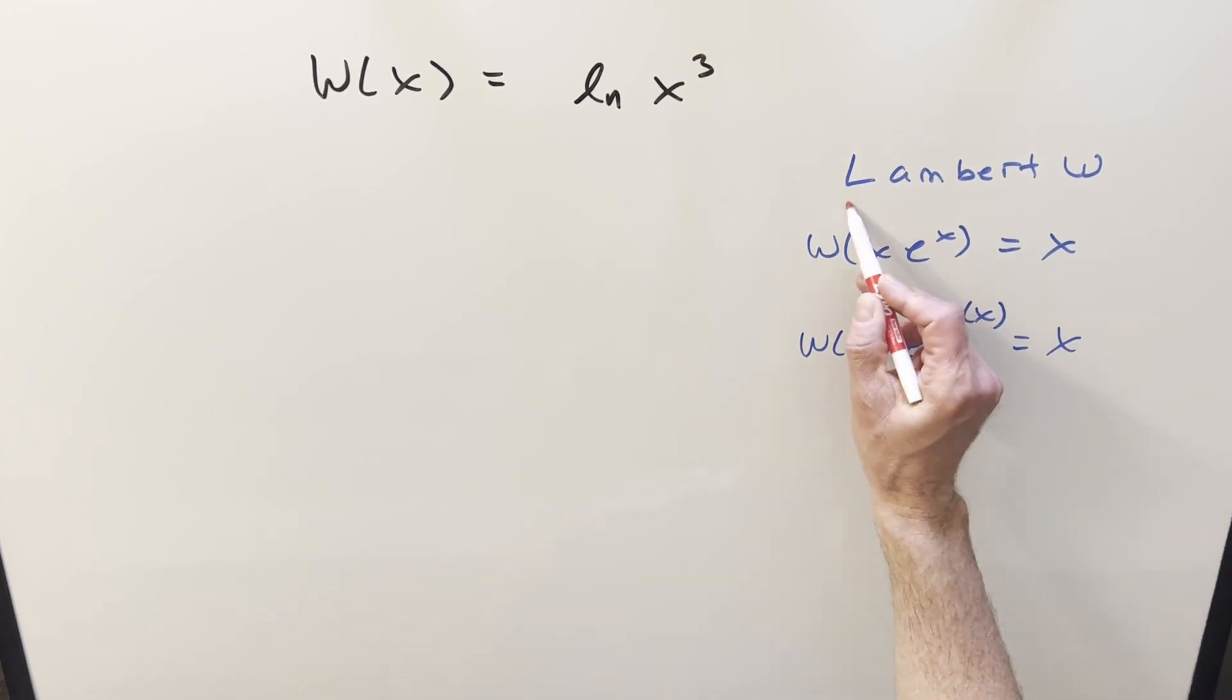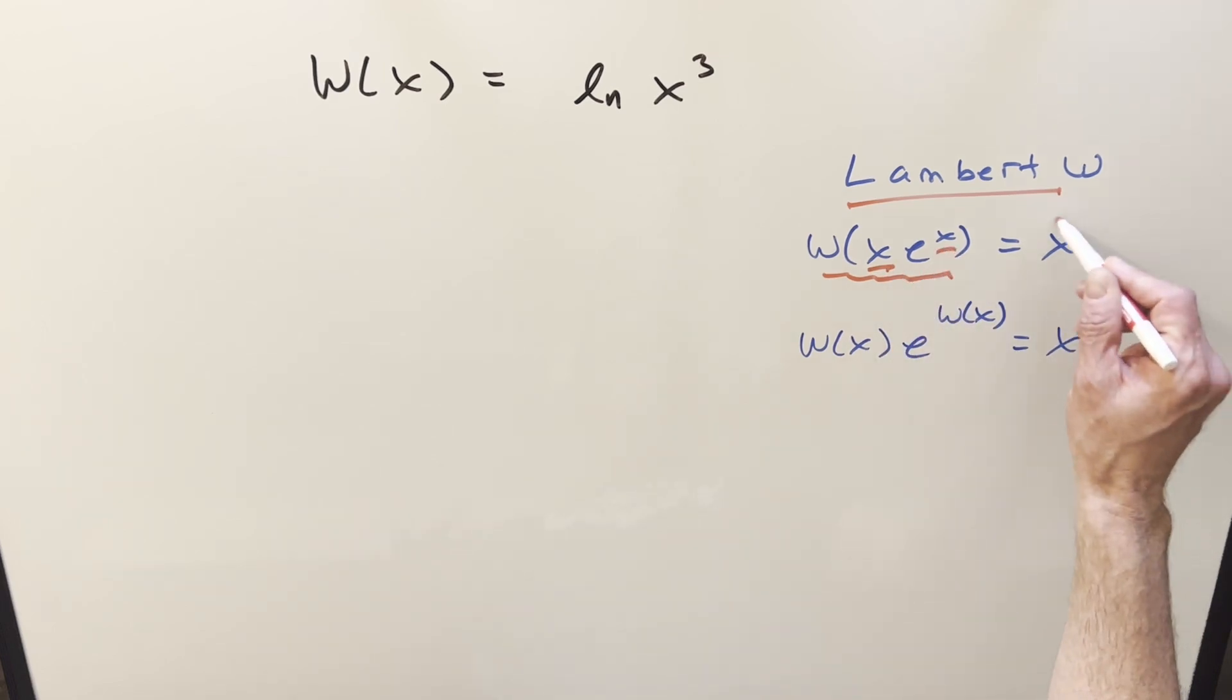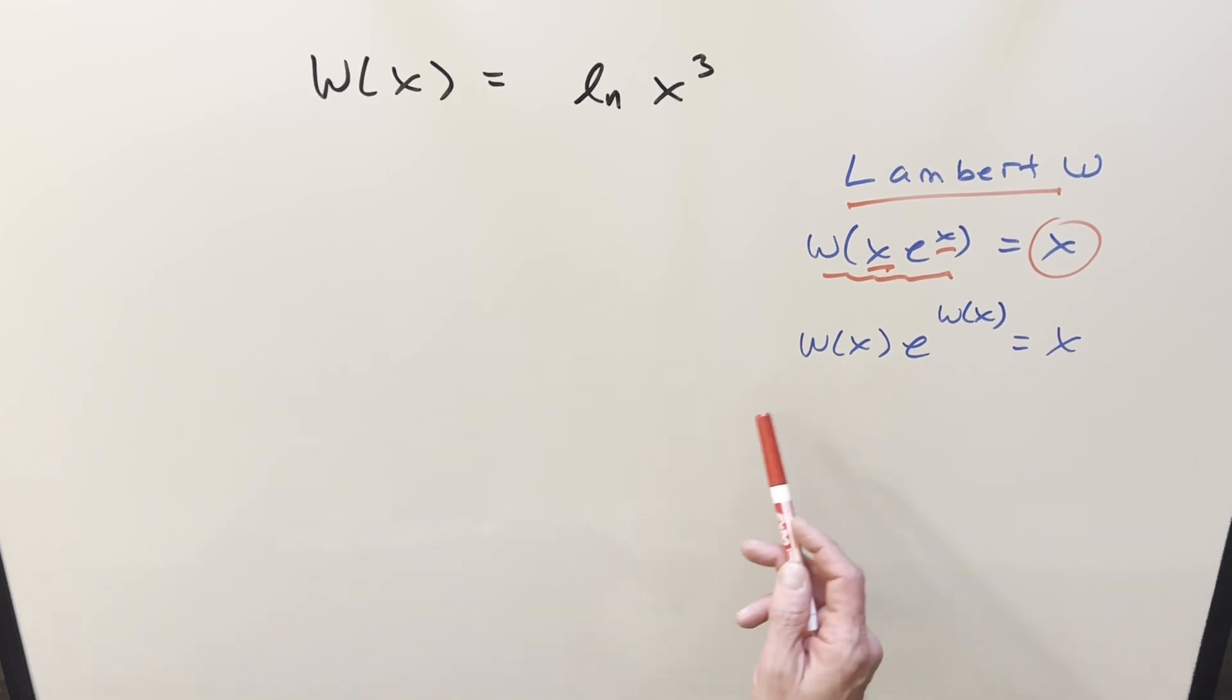Over to the right, we've got a couple useful formulas for the Lambert W function. This one is probably the most important one, that if we've got something and we take the Lambert W function on it, if we have the same coefficient and exponent around an e, we just pull out the x. And I think in this video, this second one could be useful as well. If we can get something in this form again, we can get back the x.